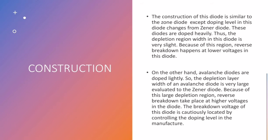On the other hand, avalanche diodes are doped lightly. So the depletion layer width of an avalanche diode is very large evaluated to the Zener diode. Because of this large depleted region, reverse breakdown takes place at higher voltages in the diode. The breakdown voltage of this diode is cautiously located by controlling the doping level in the manufacture.